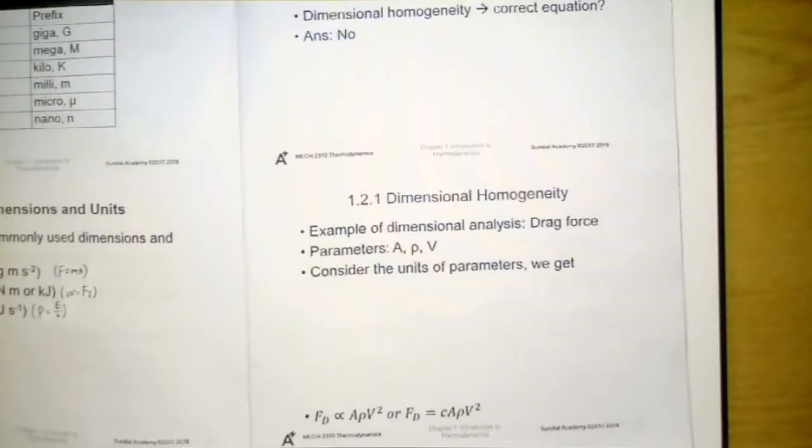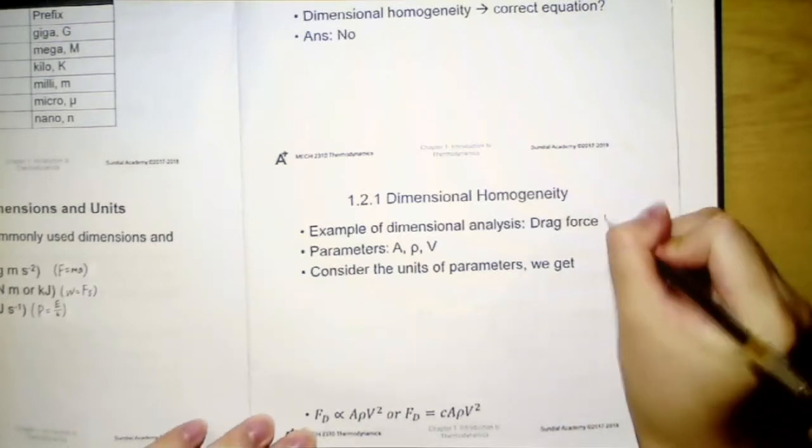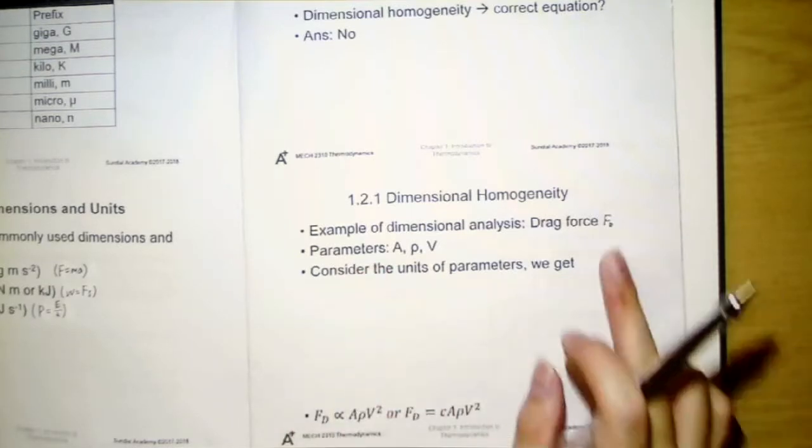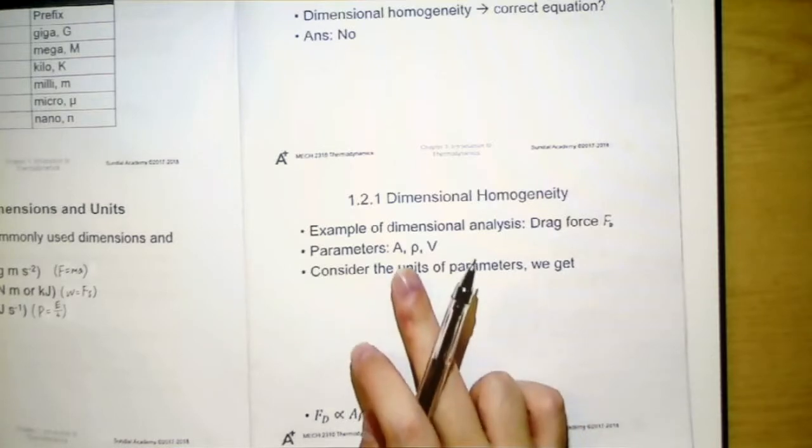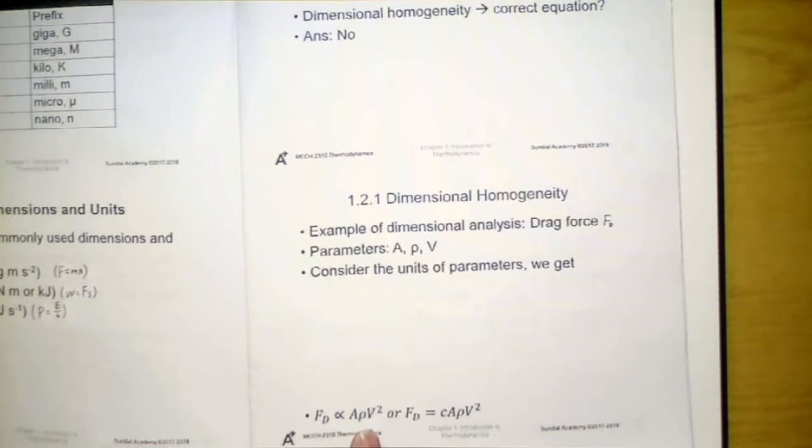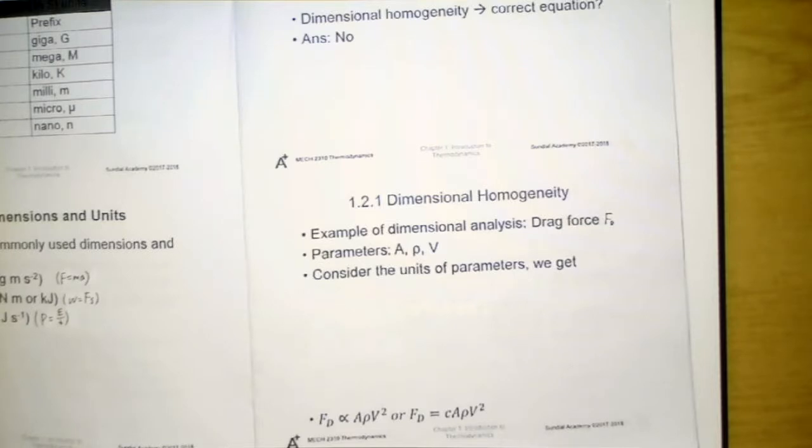We can use the concepts of dimensional homogeneity to derive some of the equations. For example, I would like to find out the relation of drag force Fd with respect to other parameters. We know that drag force will depend on the projected area A, the density of air rho, as well as the velocity of air V. By considering the units of parameters, we can conclude this. That is, Fd is directly proportional to this one, or we can express it by adding a multiplicative constant.